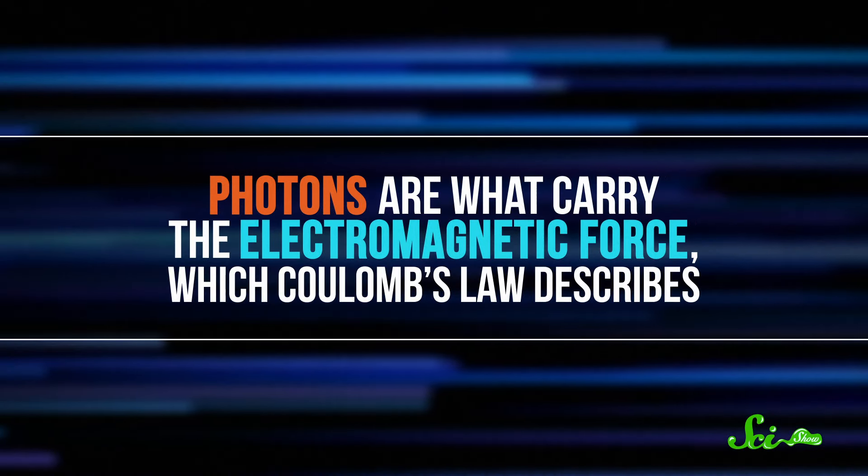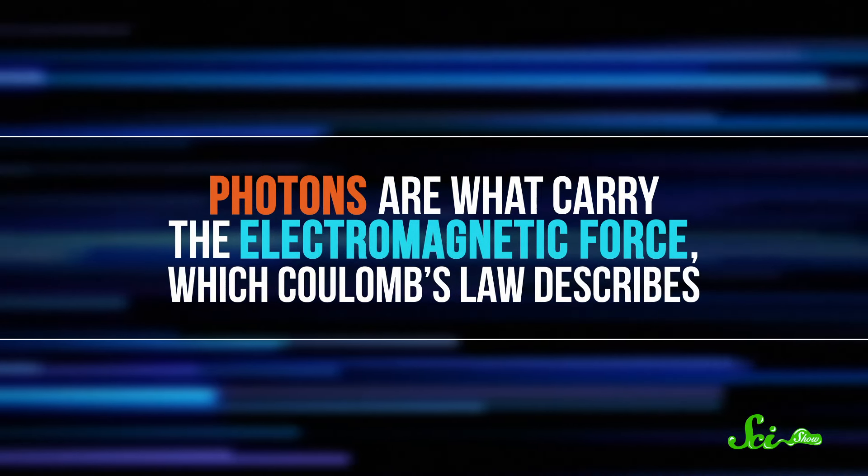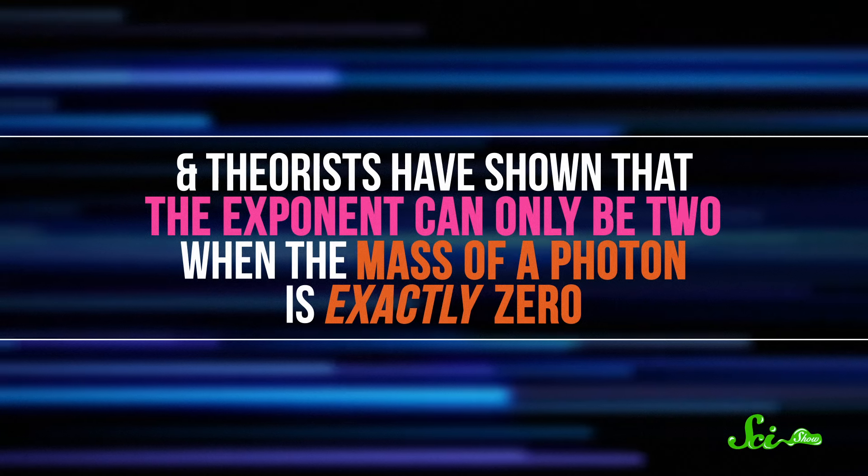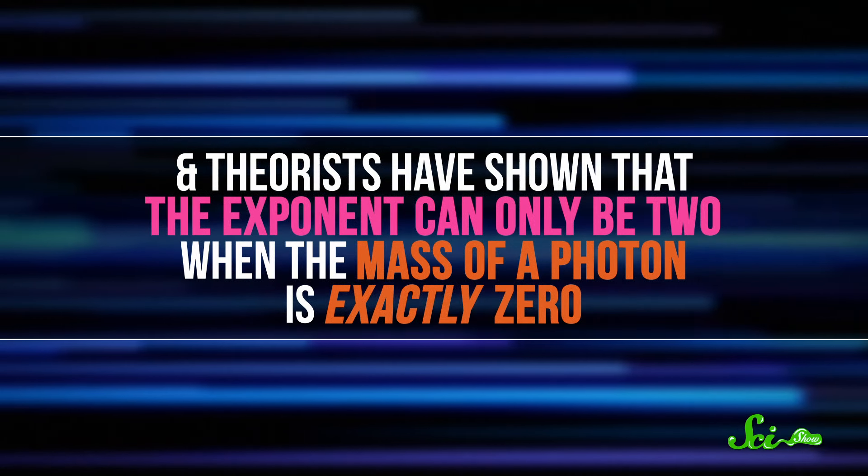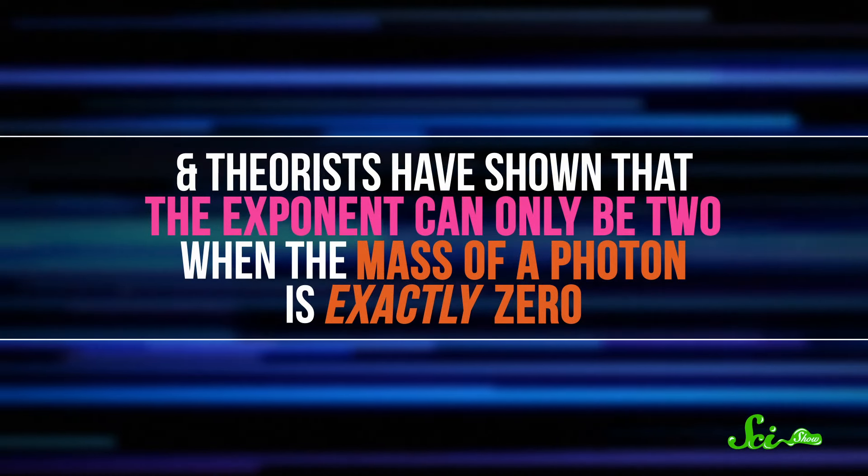Photons are what carry the electromagnetic force, which Coulomb's Law describes. And theorists have shown that the exponent can only be 2 when the mass of a photon is exactly zero. And the inverse is also true.